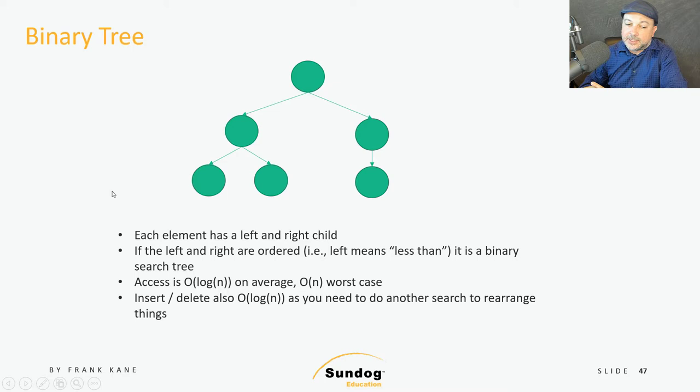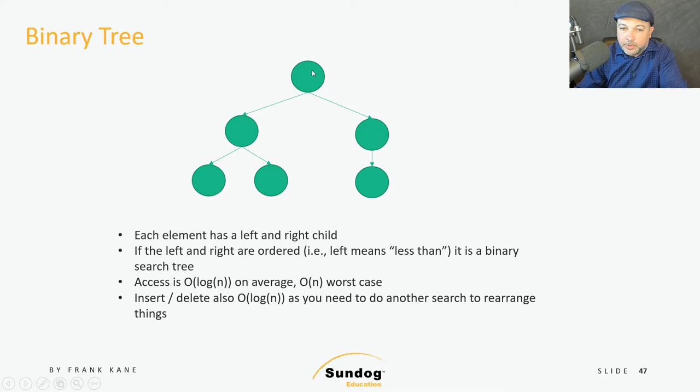The thing I'm looking for is either less than or greater than the thing I'm at, so I pick one direction and I've again cut my search space in half yet again. So we've gone from the entire search space to half to half of half. That is a logarithmic relationship, which is why we say that access is O(log n) on average. However, there is a worst case scenario you need to know about as well. If you were to insert things into a binary search tree in sorted order, this would degenerate to a linked list — and that's going to be O(n).